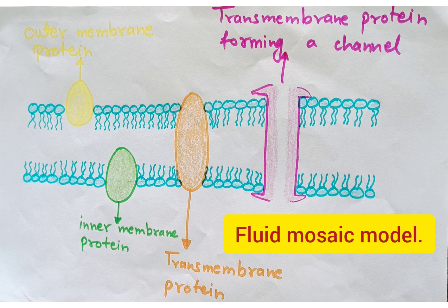The cell membrane comprises of 55% proteins, 25% phospholipids, 13% cholesterol, 4% other lipids, and around 3% carbohydrates.